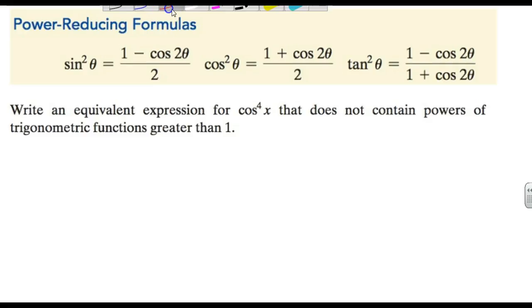So if I want an expression for cosine to the fourth that does not contain powers of trigonometric functions greater than one, well, notice what's going to happen here. The cosine to the fourth, notice cosine to the fourth x is the cosine squared of x squared.